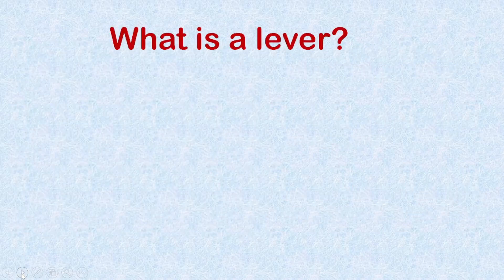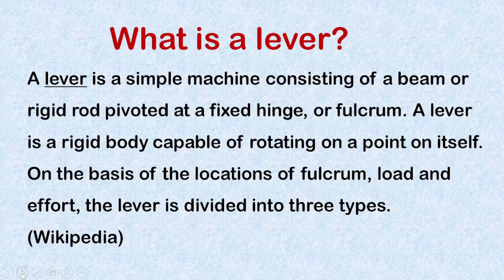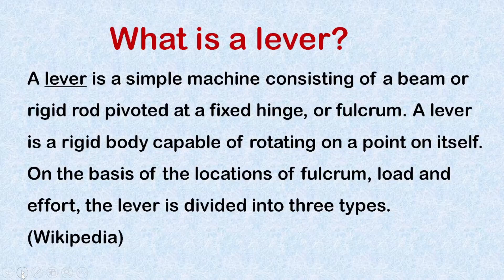Now let's discuss what is a lever. A lever is a simple machine consisting of a beam or rigid rod pivoted at a fixed hinge or fulcrum. A lever is a rigid body capable of rotating on a point on itself. On the basis of the locations of fulcrum, load, and effort, the lever is divided into three types, according to Wikipedia.